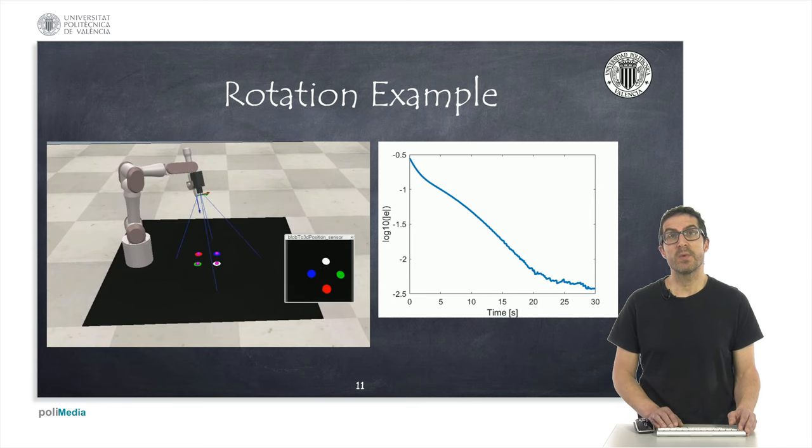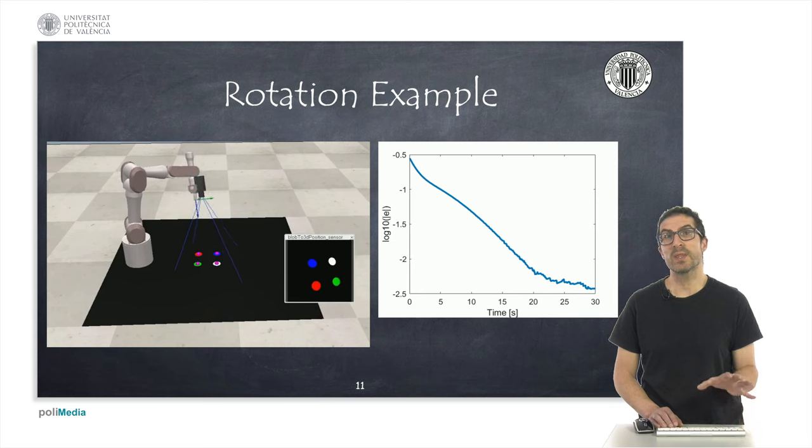As it can be seen, the robot is capable of solving the problem. The configuration reached doesn't have to coincide with the reference one, since this is a redundant robot with seven degrees of freedom.